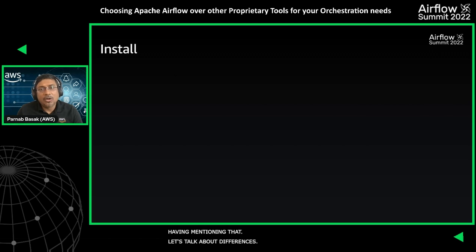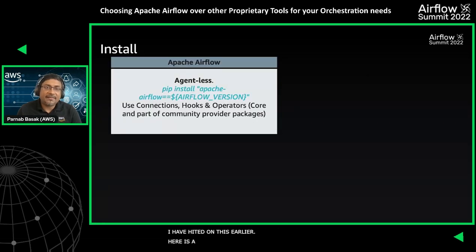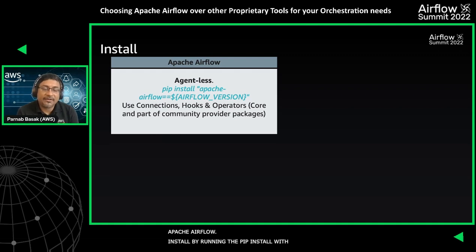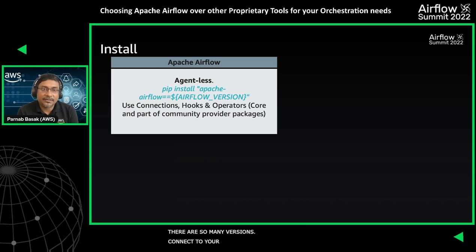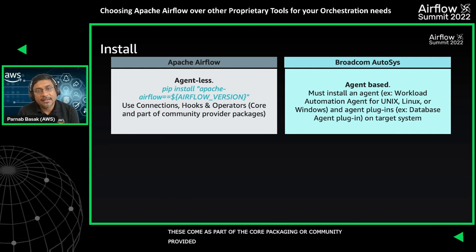Having understood the architecture, let's talk about installation differences. In Apache Airflow, the tool is essentially agentless. You install it by running 'pip install apache-airflow' with a specific version. For connecting to data sources and compute instances, you use Airflow connections, hooks, or operators, which come as part of core packaging or community-provided packages.